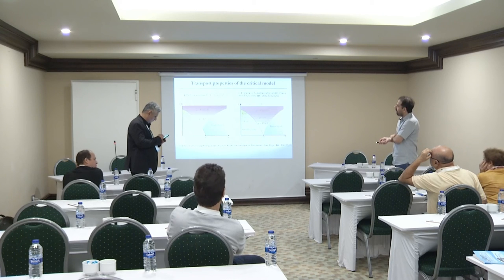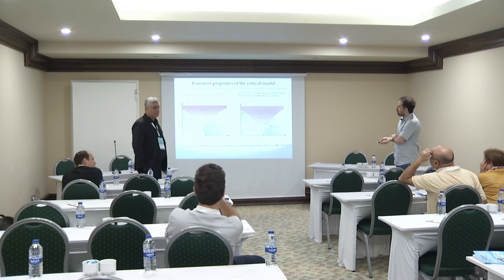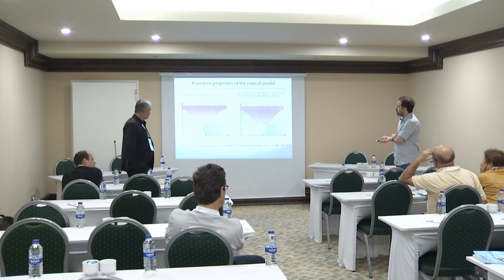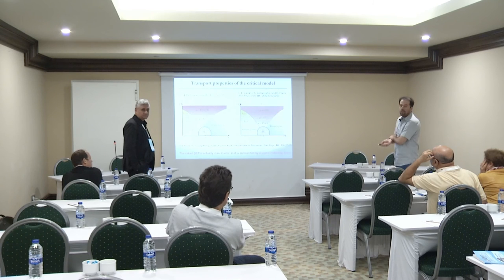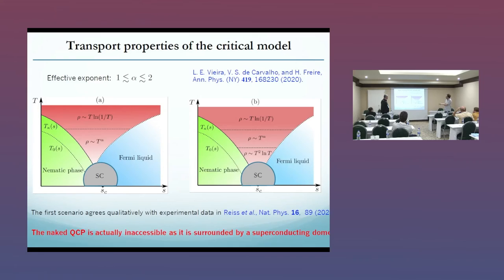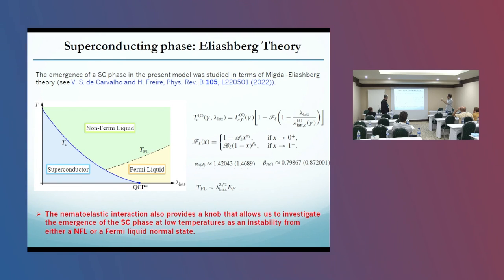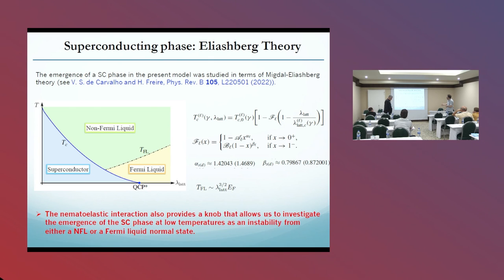There is no divergent nematic correlation length in this case. What we can do is calculate the induced superconductivity mediated by the order parameter coupled to the acoustic phonons. When we do that, we do see a superconducting phase, although a bit reduced compared to the nematic quantum critical theory with no acoustic phonons included.